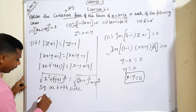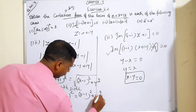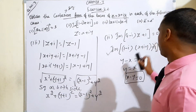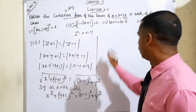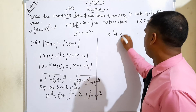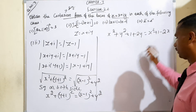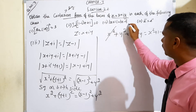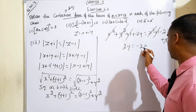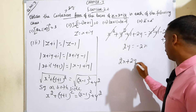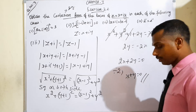Squaring both sides: x² + (y+1)² equals (x minus 1)² + y². Expanding using the a plus b whole square formula: x² + y² + 1 + 2y equals x² + 1 minus 2x + y². Cancelling x², y², and 1 from both sides, the balance is 2y equals minus 2x. Bringing 2x to the other side: 2x + 2y equals 0. Dividing each term by 2: x + y equals 0. This is the answer for subdivision 3.